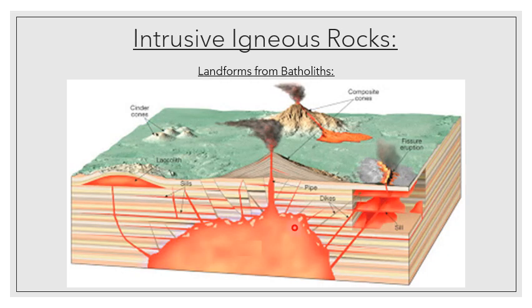We've got our batholith over here feeding all the different igneous intrusions. As time passes, this batholith, along with all the other volcanic or igneous intrusions, will start cooling down, solidifying and crystallizing. Along with that, we'll have erosion of the top soil layers.